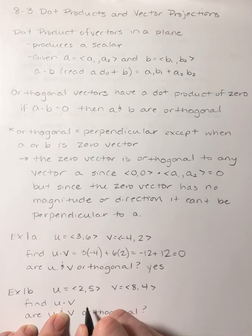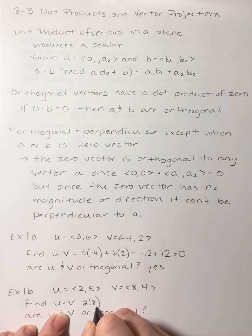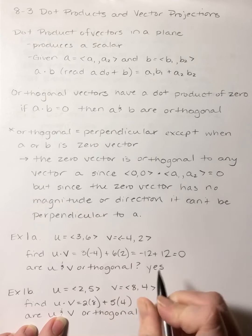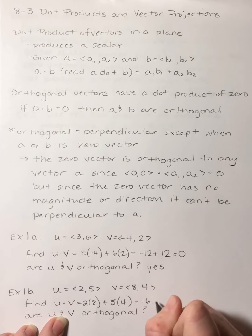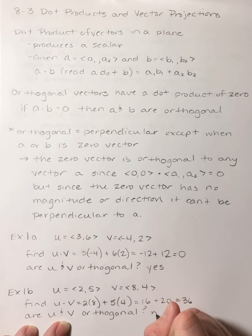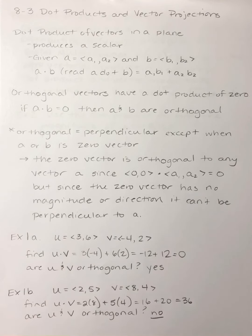U dot v, I'm going to do 2 times 8 plus 5 times 4. So I'd have 16 plus 20, which is 36. My dot product is not zero, so they are not orthogonal.